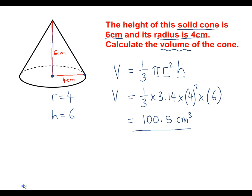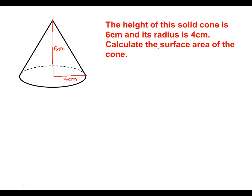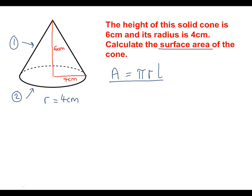Now we're going to have a go at finding the surface area of this cone — same question, except this time we're finding surface area. When we look at the formula sheet, we're told that the area of the curved part of the cone is given by πRL. A cone is made from two parts: the curved part, and the circle at the bottom. We know R is the radius, which is 4 centimetres. What we don't know is L — L is the diagonal slant length of the cone. Sometimes they give you the length; this time we are asked to work it out.